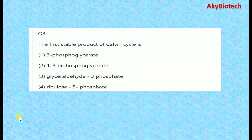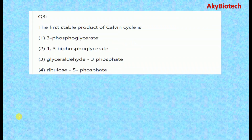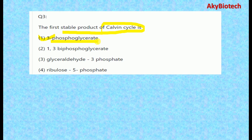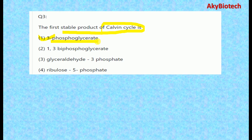Question three: What is the first stable product of the Calvin cycle? The first stable product is 3-phosphoglycerate (3-PGA). Option number one is the correct answer.